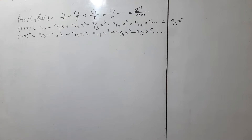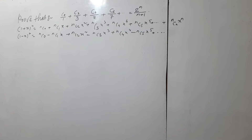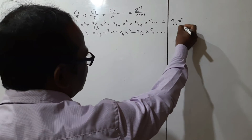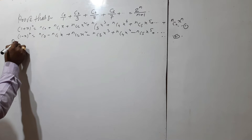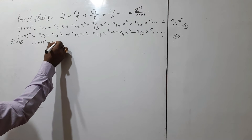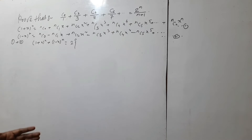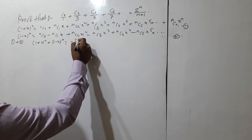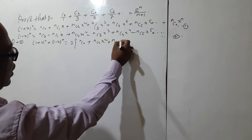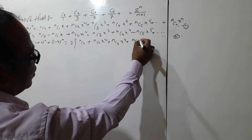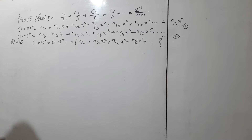Adding expression 1 and expression 2: the odd-powered terms cancel and the even-powered terms double. So (1+x)^n plus (1-x)^n equals 2 times (nC0 plus nC2·x² plus nC4·x⁴ plus nC6·x⁶ plus …).